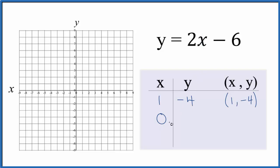Then 0, that's always a good one to put in there. 2 times 0, that's 0. 0 minus 6 is minus 6.